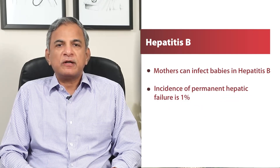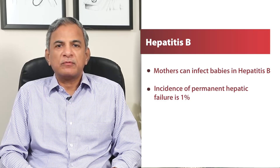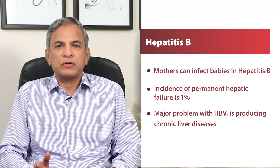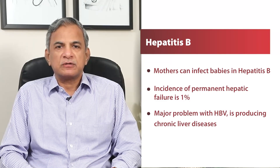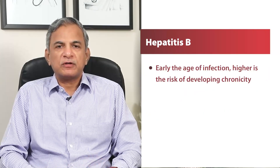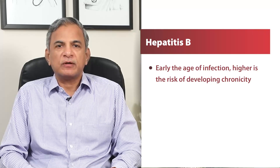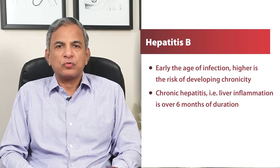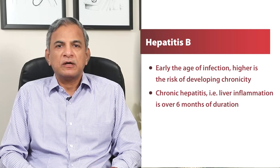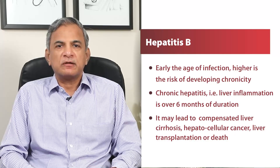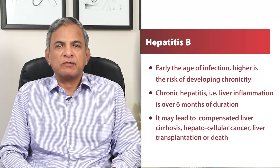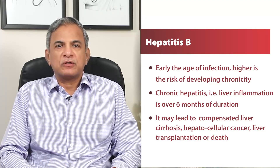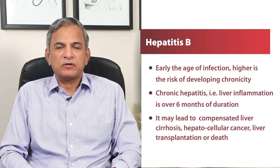The incidence of fulminant hepatic failure is approximately 1% with HBV. But the major problem with Hepatitis B virus is that it produces chronic liver disease. The younger the age of infection, the higher is the risk of developing chronicity. Chronic hepatitis means liver inflammation of over 6 months duration, and it can lead to compensated liver cirrhosis, decompensation, development of hepatocellular cancer, need of liver transplantation, and often death related to HBV infection.